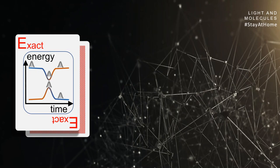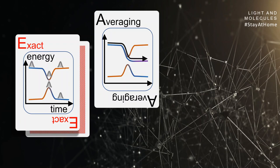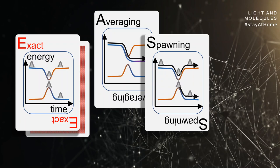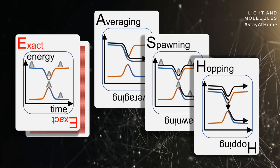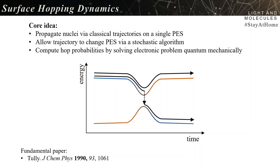In summary, we have exact wave-packet propagation between electronic states within the Born-Oppenheimer approximation. In mixed quantum-classical dynamics, you can emulate this process by averaging surfaces as in Ehrenfest or CTMQC dynamics, by spawning new trajectories every time the system enters a region of nonadiabatic coupling as in multiple spawning, or by hopping trajectories between surfaces. For this talk, I will focus on surface hopping: propagating nuclei with classical trajectories on a single potential energy surface and allowing the trajectory to change surface via a stochastic algorithm.